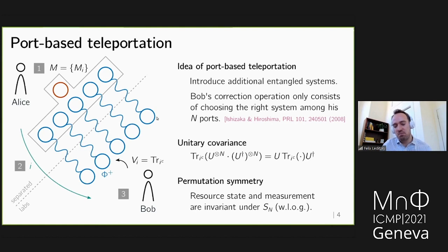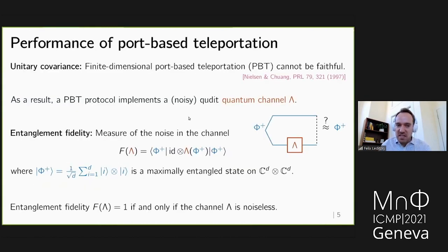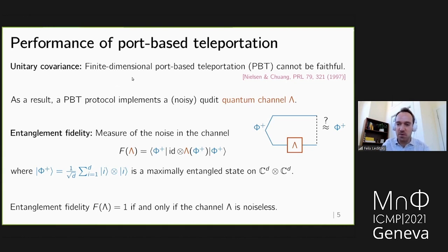Port-based teleportation has two symmetries: unitary covariance and permutation symmetry across the N ports. However, a no-go result by Nielsen and Chuang shows that finite-dimensional unitary-covariant teleportation cannot be faithful. As a result, port-based teleportation implements a noisy quantum channel, and we characterize this noise using the entanglement fidelity — measuring how close the output is to the input entangled state, where fidelity equals one if and only if the channel is noiseless.